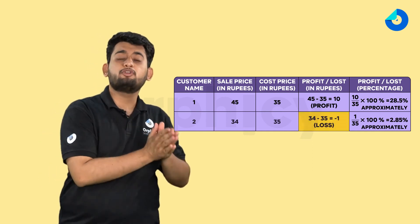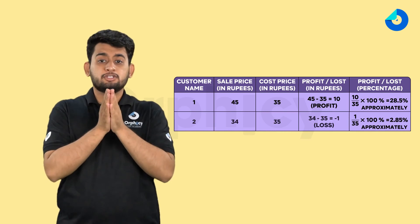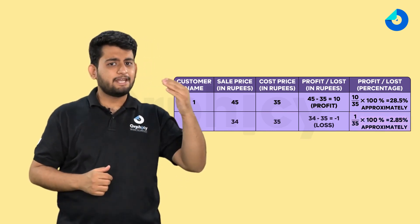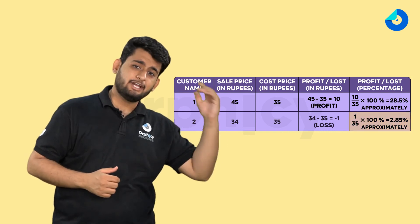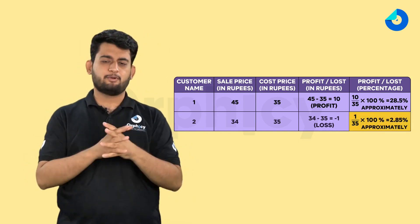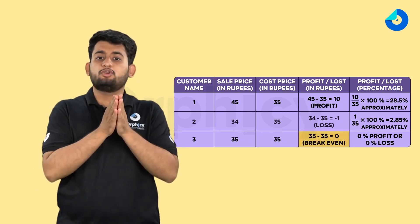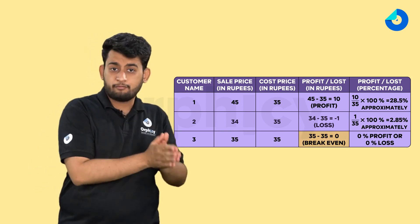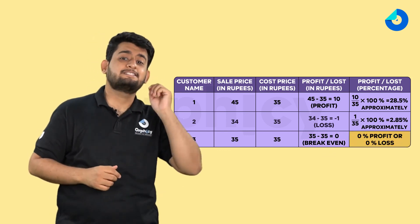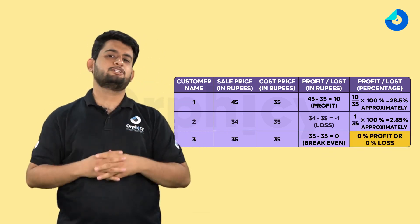For the second customer, there was a 1 rupee loss and the cost price was 35. So the loss percentage will be 1 divided by 35 into 100%, which is approximately 2.85%. Finally, for the third customer, we can say that there is 0% profit or loss. This is how you can use percentages in profit and loss questions.